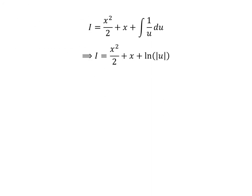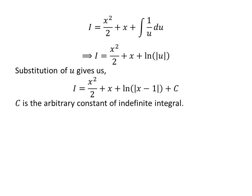The integral of 1 upon u with respect to u is the natural log of the absolute value of u. To know in detail how to get this integral, please click on the card appearing in the upper right corner; the address of the video is also in the description. So i is equal to x squared upon 2 plus x plus the natural log of the absolute value of u. Since we assumed u is equal to x minus 1, i equals x squared upon 2 plus x plus natural log of absolute value of x minus 1, plus capital C — the arbitrary constant of indefinite integration. Never forget to add this constant at the end of any indefinite integral.